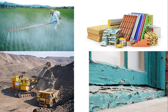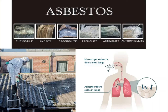Chemicals can come from the house — here we have asbestos, found in the roof. The fibers of asbestos settle in the lung. The microscopic asbestos fibers enter the lung and cause disease in the lung.